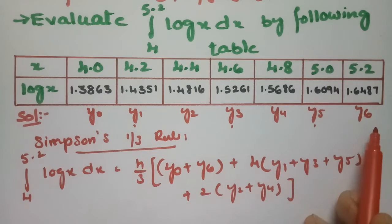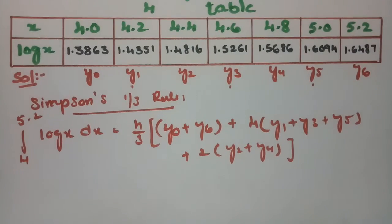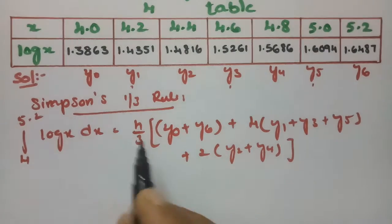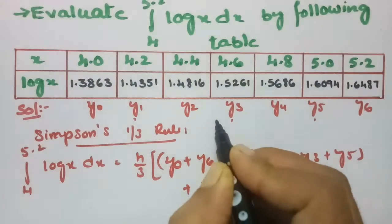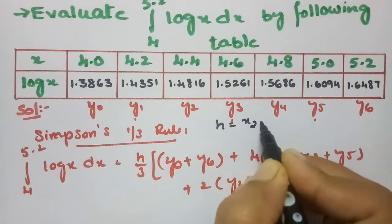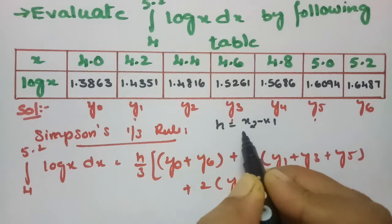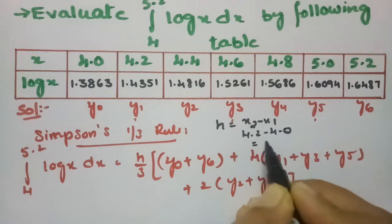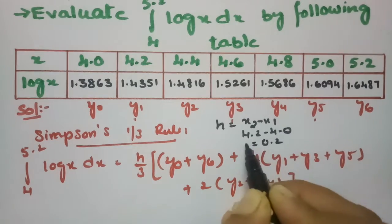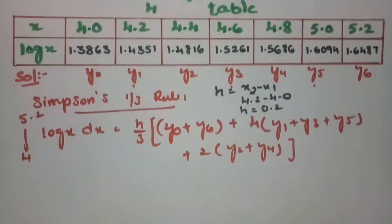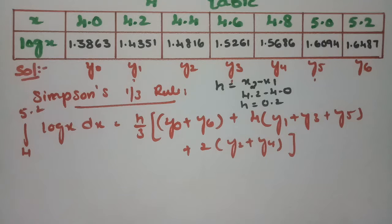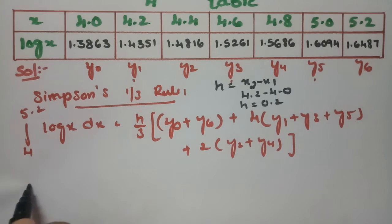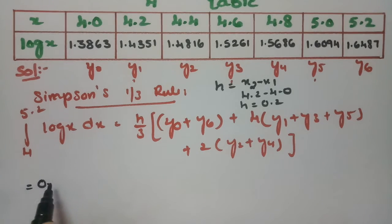So we have a total of 7 ordinates. Now I am going to substitute all the values. The h value is x2 minus x1, which is 4.2 minus 4.0 = 0.2. So h = 0.2, meaning h/3 = 0.2/3.